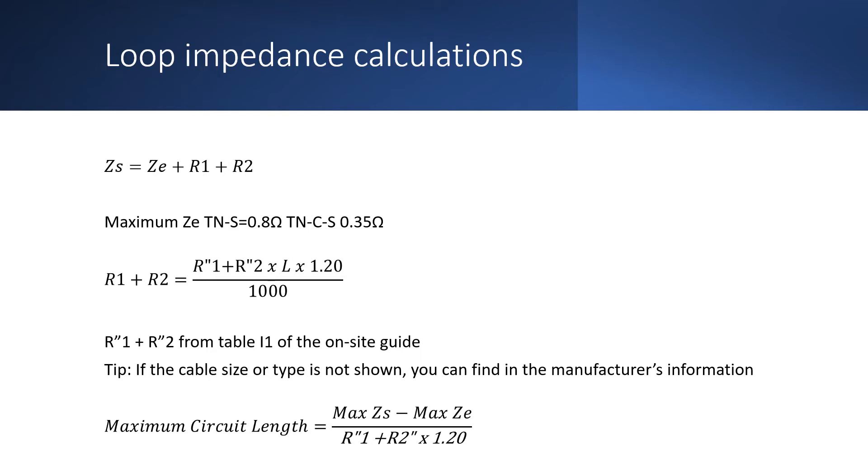There is only one difference to this equation when we're carrying out the circuit length. As you noticed before, we divide by 1000. This is because the values are given in milli-ohms per meter. So when we're carrying out this equation, we have to first divide the tabulated value of R1 and R2 by 1000.